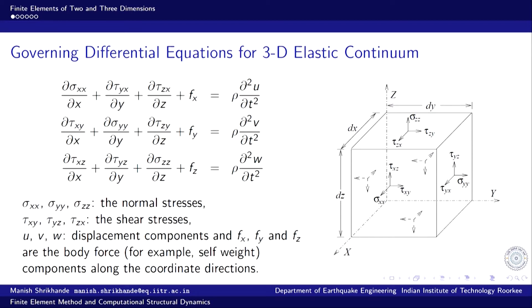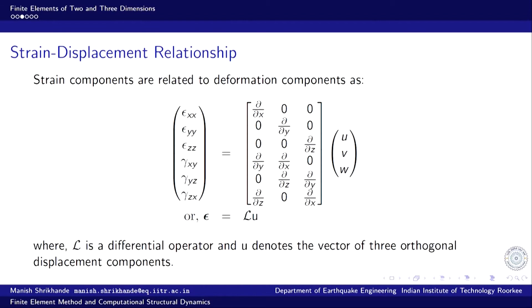The operators in the governing equation involve first derivatives with respect to x, y, and z acting on different stress components. If we write the equation as some operator times the stress vector, that operator turns out to be exactly the transpose of the L operator used for strain-displacement. Since L is a 6×3 operator, L-transpose is 3×6, and operating on the 6×1 stress vector gives a 3×1 result — the three equations of motion.